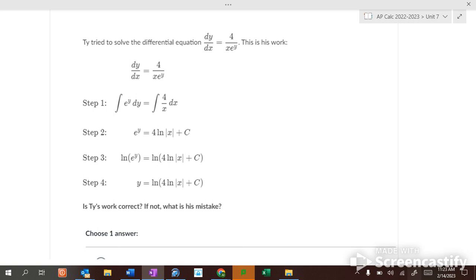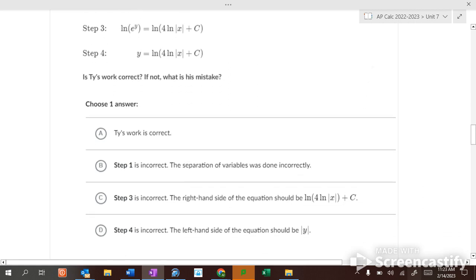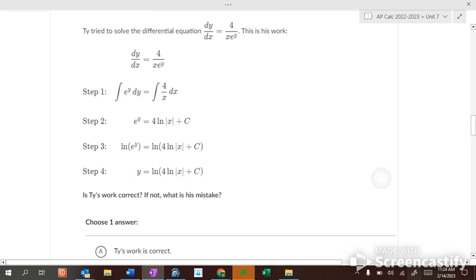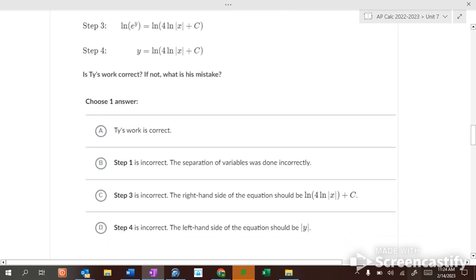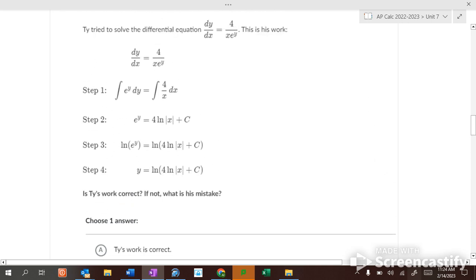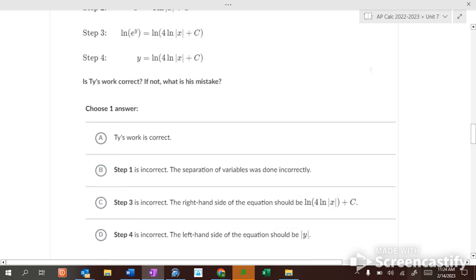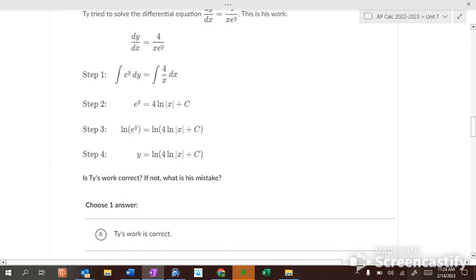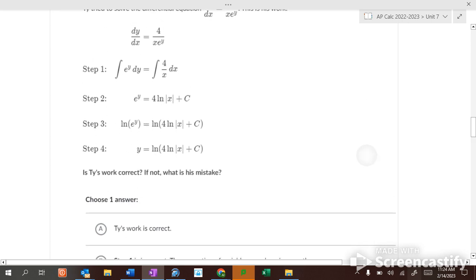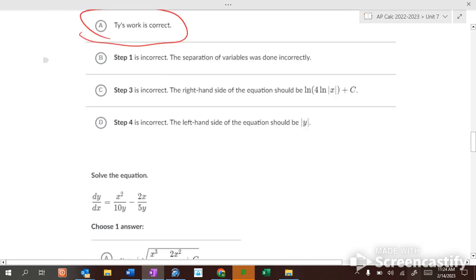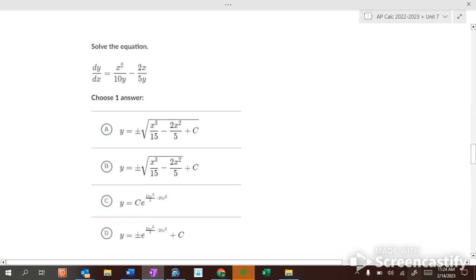So then, y is alone. Do you do the separation of variables correctly? Sure looks like it. The right-hand should be ln of 4n plus the c outside. Nope. C should be inside. And the left-hand should be the absolute value of y. I don't think so. I think Ty's work is correct.